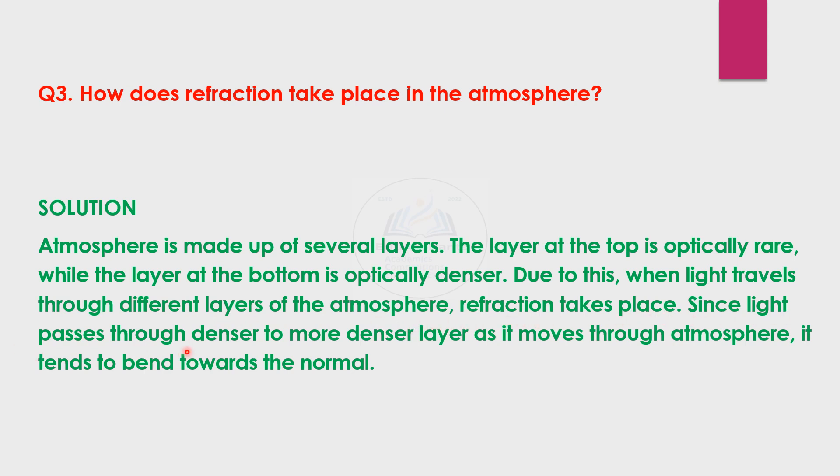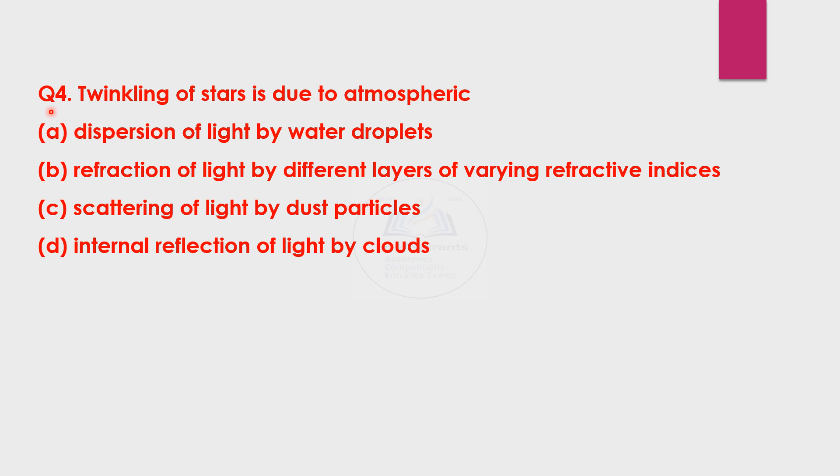Since light passes through denser to more denser layer as it moves through atmosphere, it tends to bend towards the normal. So that is the correct answer.